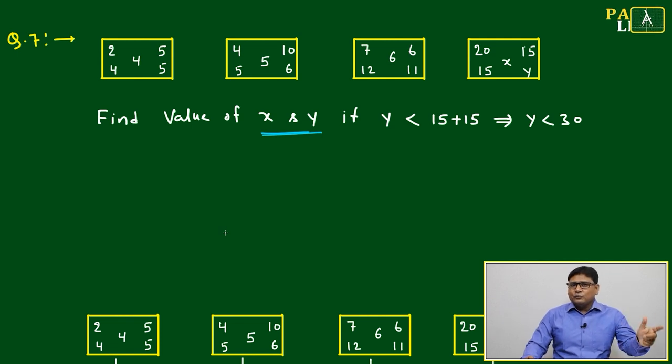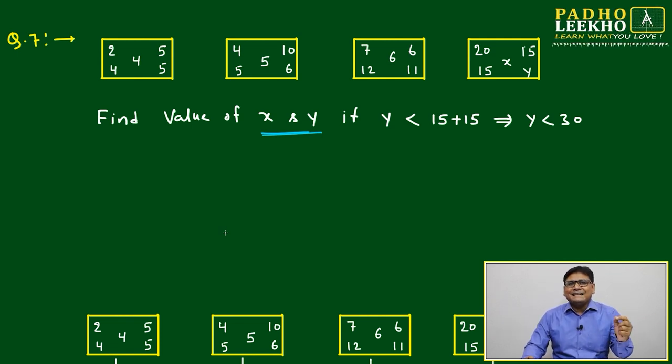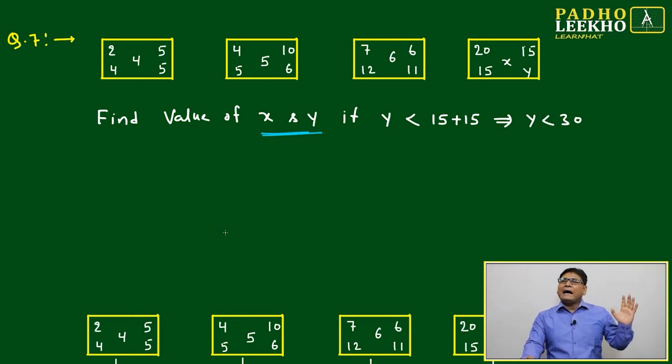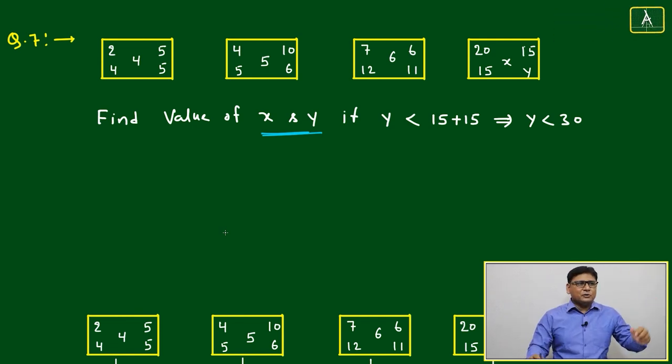If I'm asking you to find two variables in one question, certainly we have to give a bit more information. Look at this rectangle I've given where five numbers are at the corners: 2, 4, 5, 5, and at the center it's given 4. Similarly, 4, 5, 10, 6 with center 5; and 7, 12, 6, 11 with center 6.